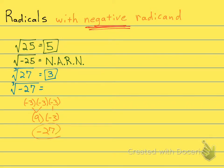So if we're multiplying something 3 times, if your index is 3 or an odd number, then this negative inside is okay.